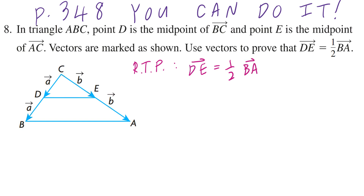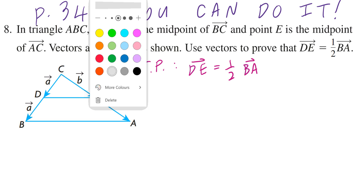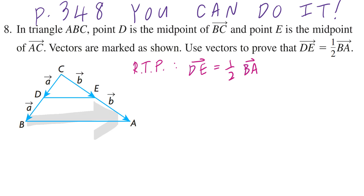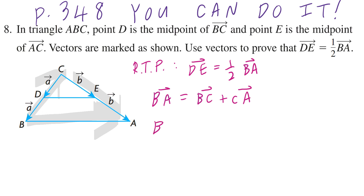Think about the following idea. If you start with BA, you're pointing from B all the way to A, and that equals BC plus CA. So vector BA equals BC plus CA. Continuing, vector BC can be written as vector BD plus vector DC. This makes sense algebraically because the inner letter is the same — they're both D in this case.